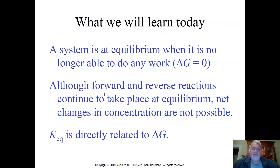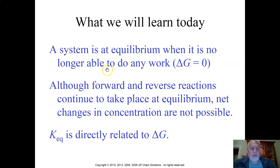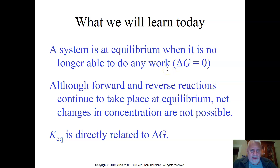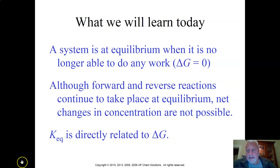Delta G is the maximal amount of work that can be done on a system — circle that, that's more the physics definition. Now, equilibrium can be related to delta G by the fact that the system is at equilibrium when it no longer is able to do any work. When you're shifting back and forth at equal rates, nothing is technically getting done in terms of work. So when delta G equals zero, that is going to be related to equilibrium. The forward and reverse reactions continue.